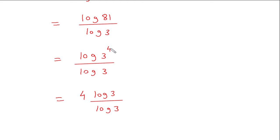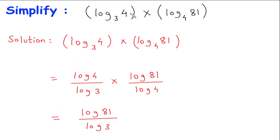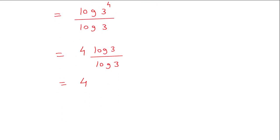We can take out the 4. Now this log of 3 and this log of 3 will get cancelled, so the final answer is 4. Therefore, log of 4 to the base 3 into log of 81 to the base 4 is equal to 4.